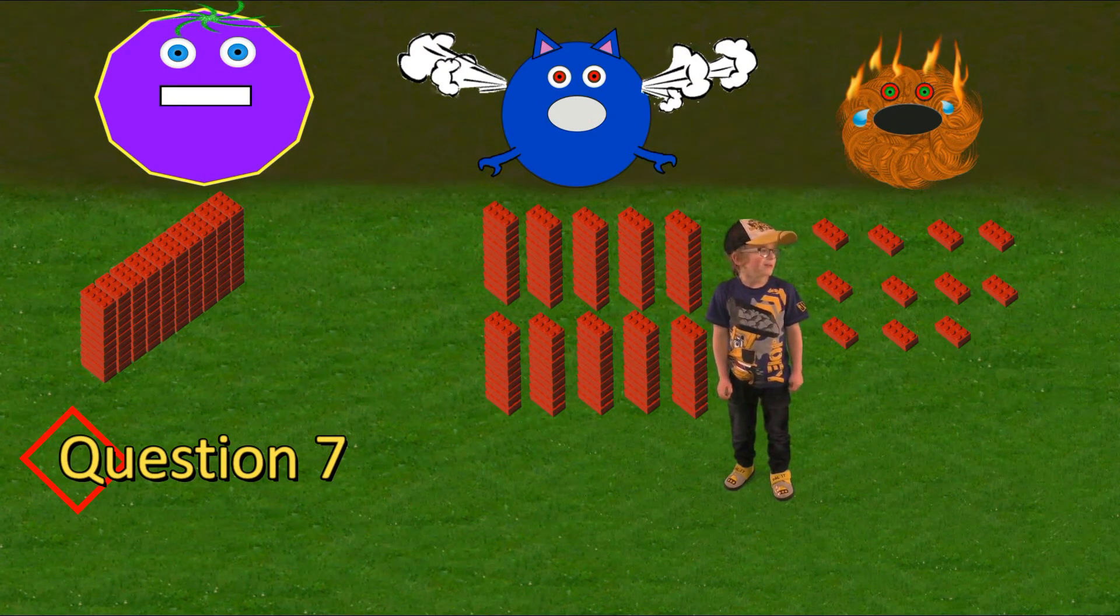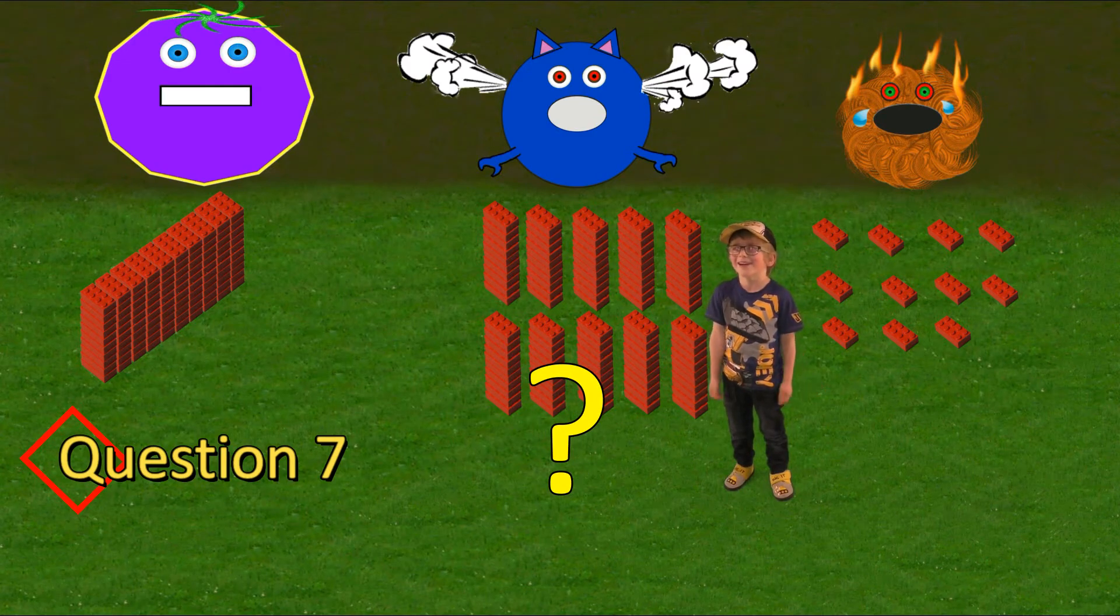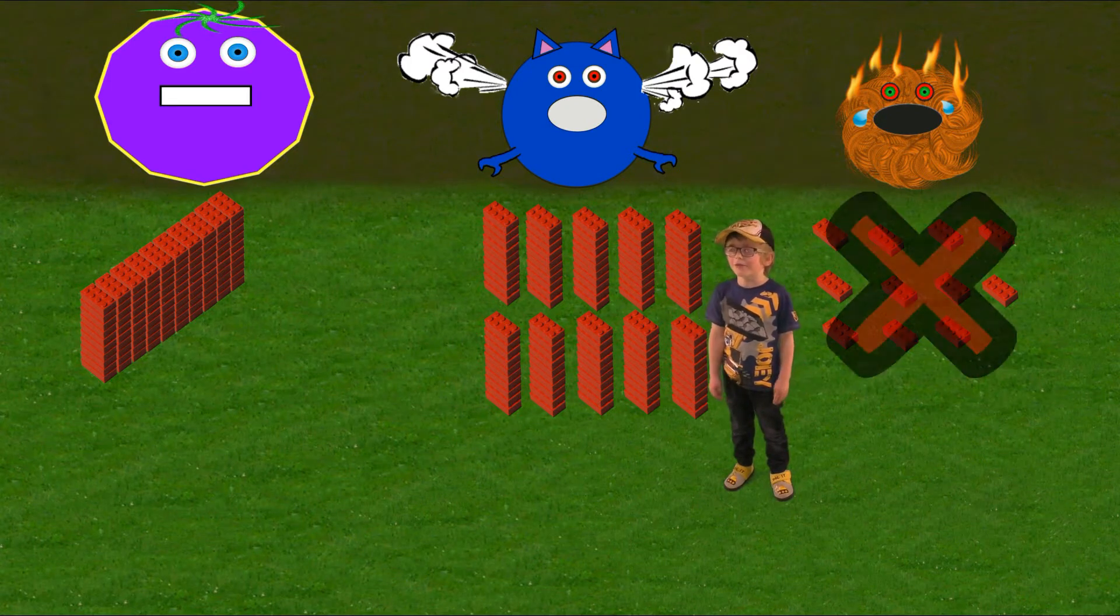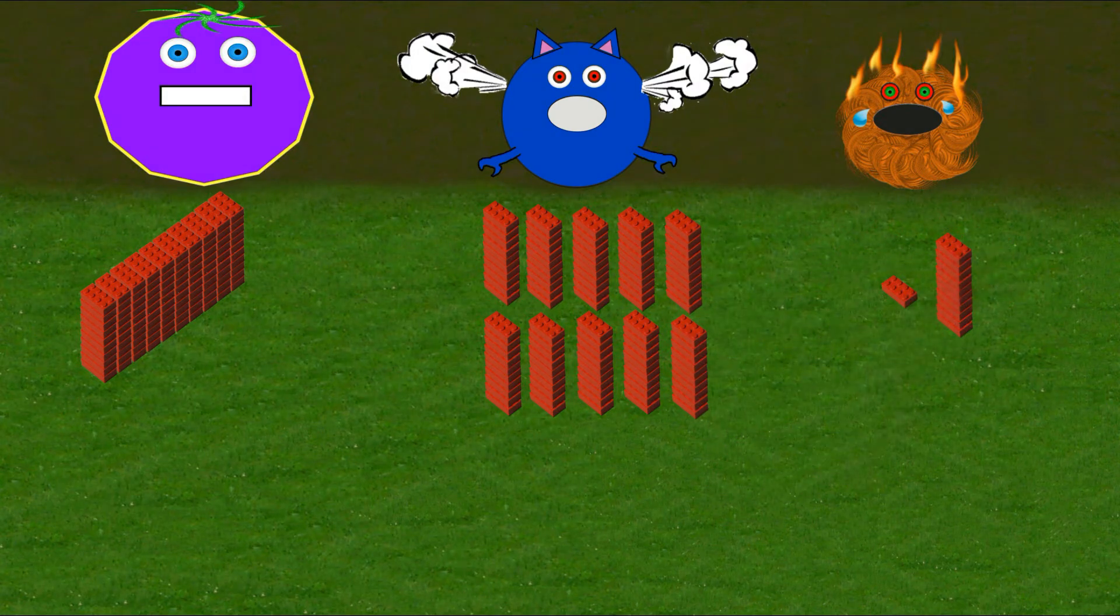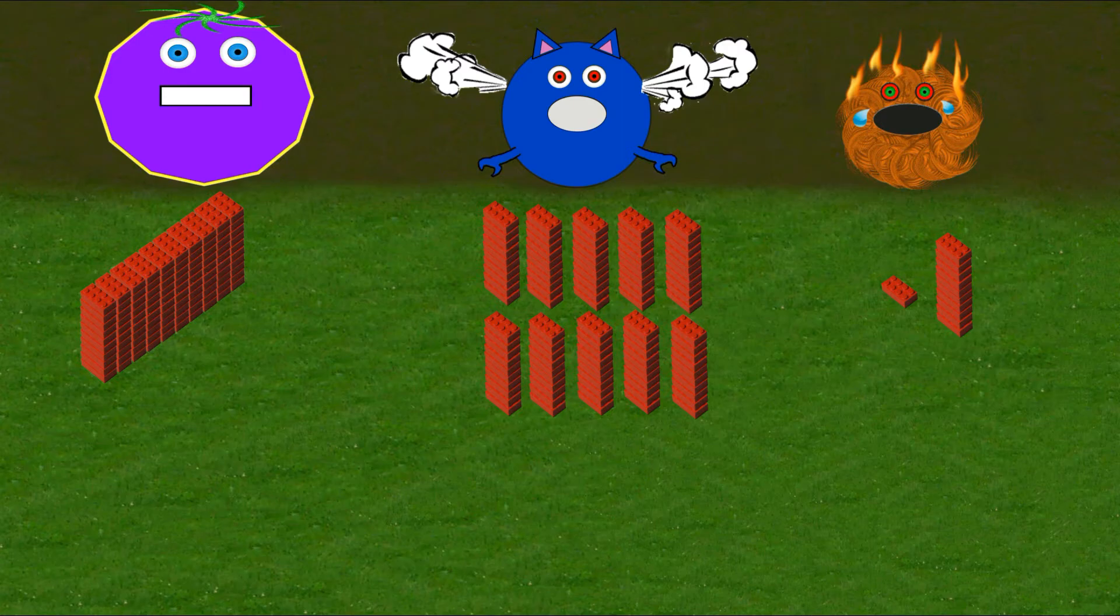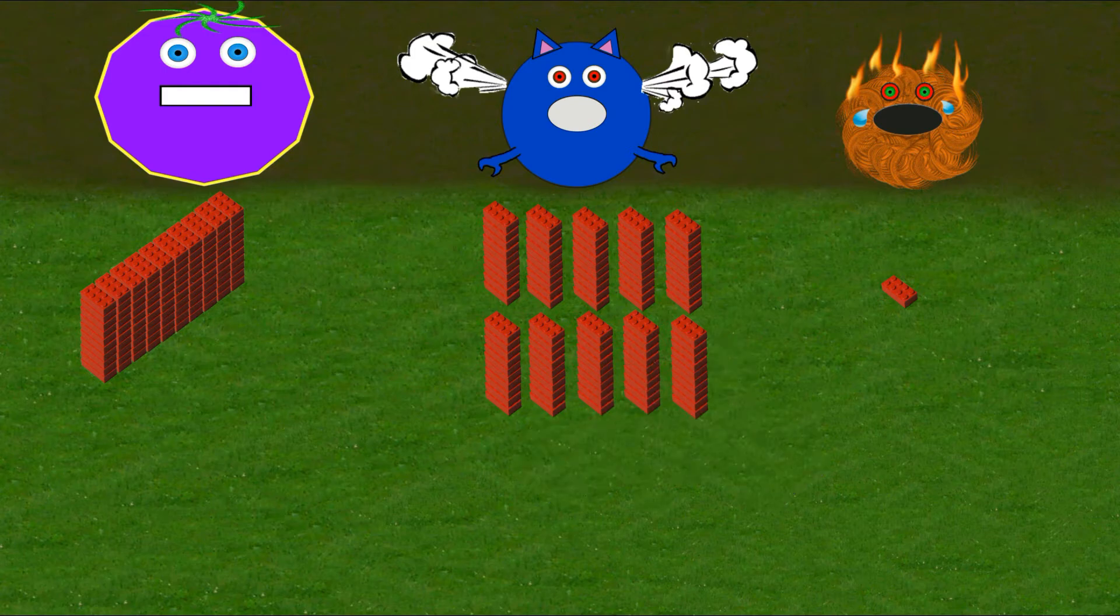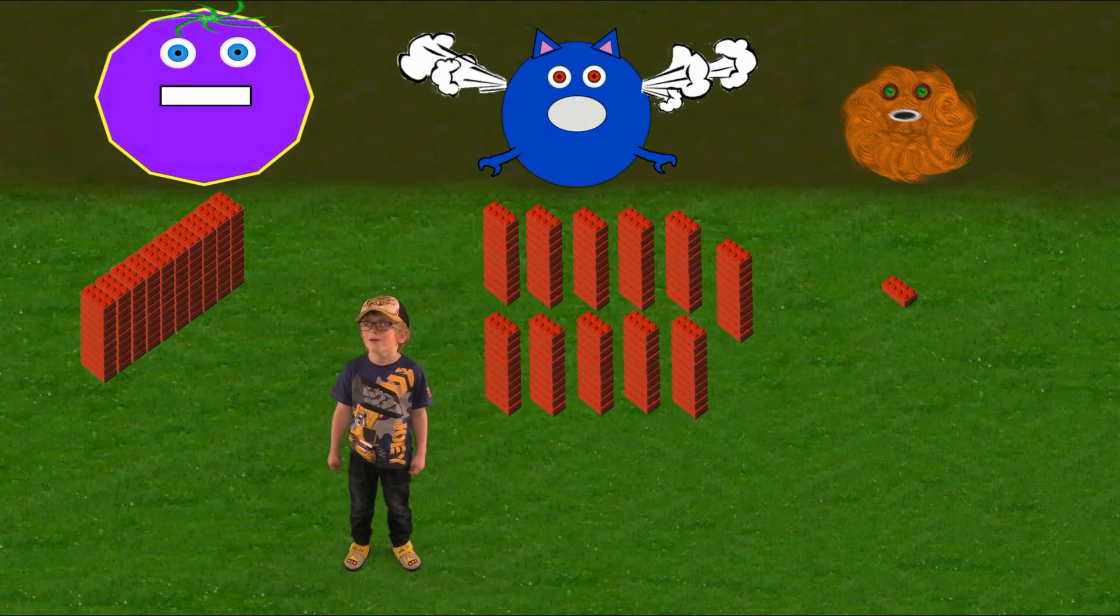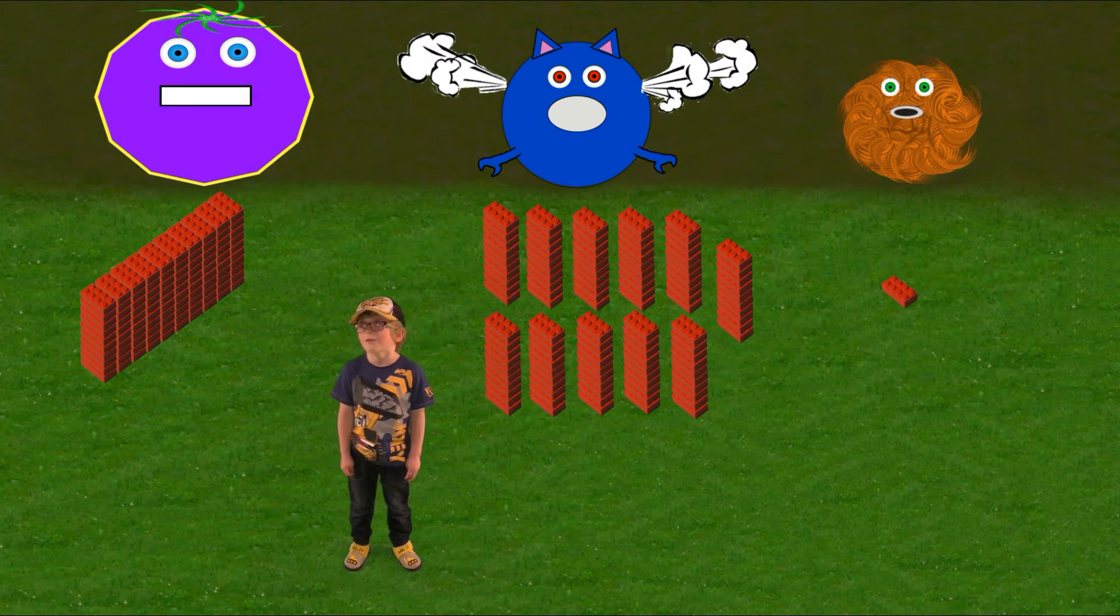Uh oh, these monsters are mad. Can you see why? The ones monster has eleven, but he can't count that high. Let's get ten of those and move them across. We don't want to lose any bricks, so let's move them across to the tens monster. He can count that's a ten, so let's move ten across. Now he only has one, he can handle that so he is calming down. Phew.